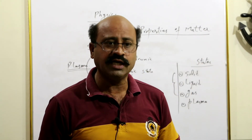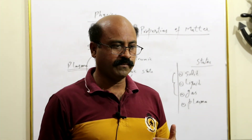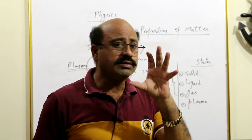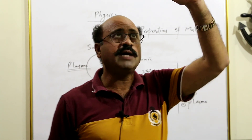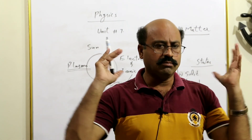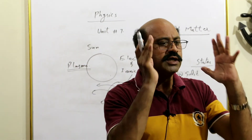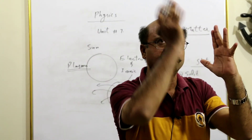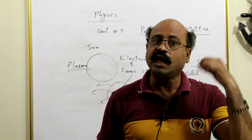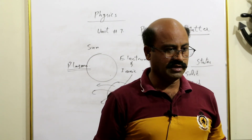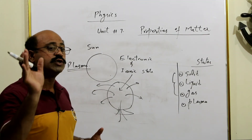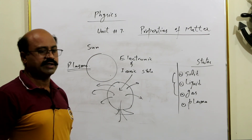Woh jo mukhtalif colors ki roshniyan hain, inhe hum plasma kahenge — kyunke electrons aap ko light dete hain. Jab baarish hoti hai, bijli kadakti hai — woh bijli basically bohat zyada heavy electronic current hai jo baadlon mein store ho chuka hota hai friction ki wajah se, aur woh zameen pe aa raha hota hai. Is liye woh electronic state aur ionic state hamen nazar aayegi. Jab neutral gas atom mein current guzara hoga, heat produce hogi — woh heat us gas molecules ko ionic state mein convert kar degi.